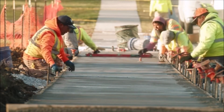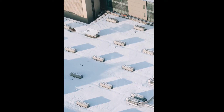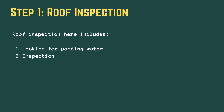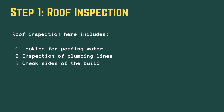Step 1: Roof inspection. Concrete roof leaks can be caused due to various reasons. It is necessary to identify the cause of leakage and cure the root cause to prevent further issues. Roof inspection includes looking for ponding water, inspection of plumbing lines, checking the sides of the building roofs, corners, drainage pipes, etc., as well as cracks in concrete surfaces.